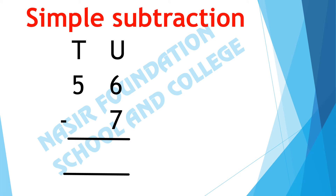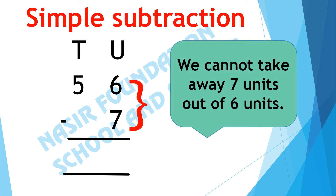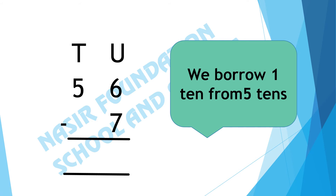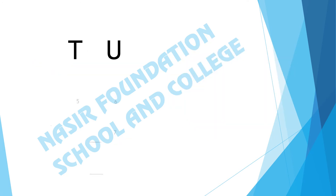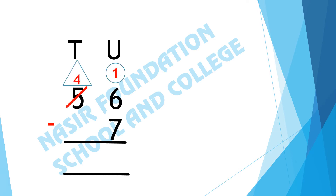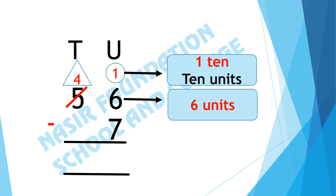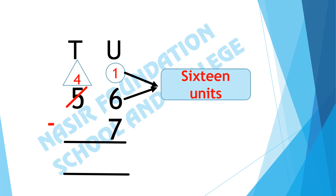Here we have different numbers. We have to subtract 7 units out of 6 units. We cannot take away 7 units out of 6 units, so we will borrow 1 ten from 5 tens. If we take 1 borrow from 5 tens, here it leaves 4 tens. We take borrow of 1 ten — it means there are 10 units — and there are 6 units we already have, making 16 units total.